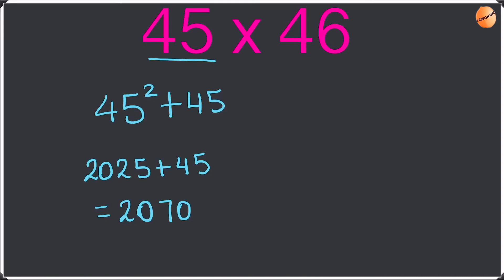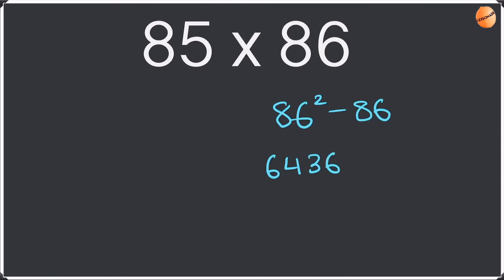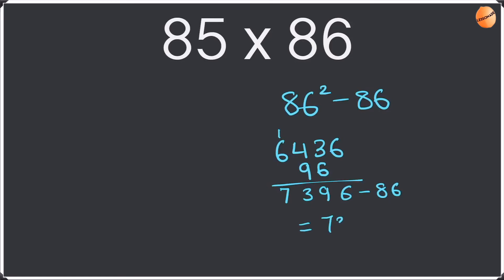Well done guys if you got that right, and well done for attempting the larger number. Next time I'm going to do the larger number and you guys will do the smaller number. So the next one is 85 times 86. I'm going to work it out using the larger number this time; you guys can work it out using the smaller number. So: 86 squared minus 86. So 86 squared is 7396. Now we have to do minus 86, which gives us 7310. So 85 times 86 is 7310. I hope you guys got that one right using the smaller number.